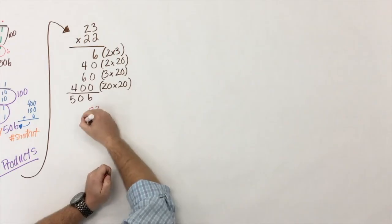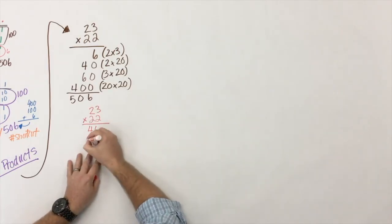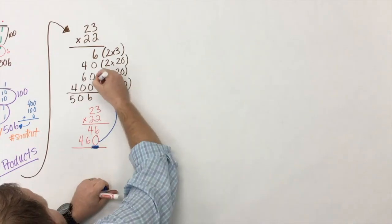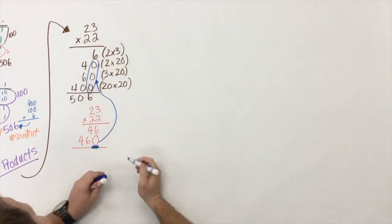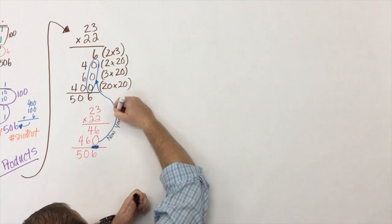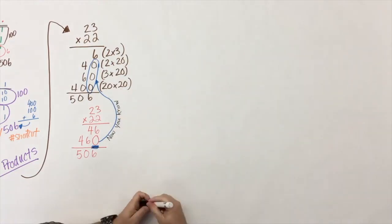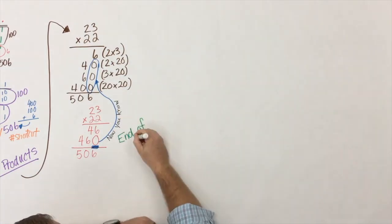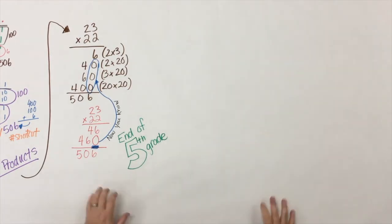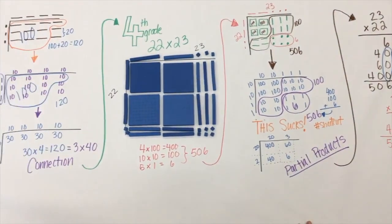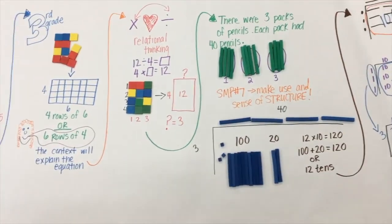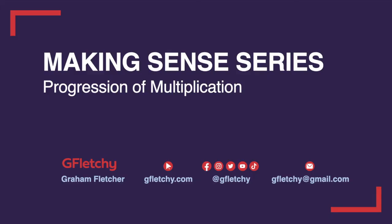Then we have the algorithm that we're all pretty much used to. You see that zero — the connection is made and students know why we put that zero there. But all of this understanding happens at the end of fifth grade. Let's not rush them — there's so much happening here and so much to explore. Let's slow down a little bit.